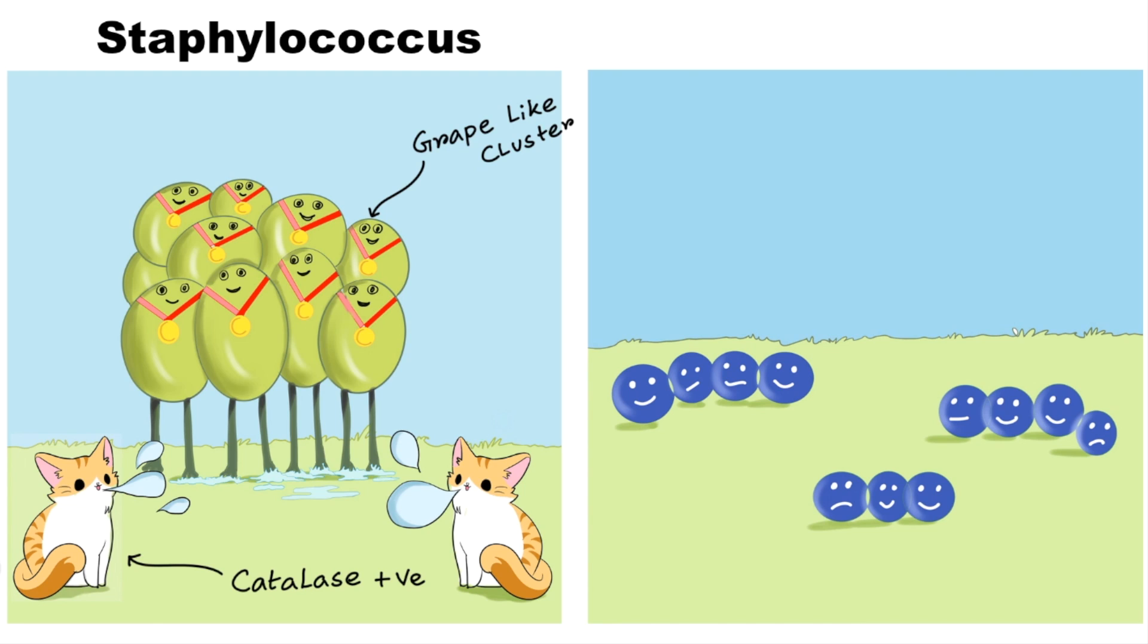For catalase testing, rub a loop across the colony of gram-positive cocci and mix on a slide with H2O2. A bubble appears. This indicates that H2O2 is being broken down into oxygen bubbles and water. So catalase positive staphylococci are present. Here you can see the air bubble comes out of the cat's mouth, which will help you remember the catalase positive activity of staphylococcus.